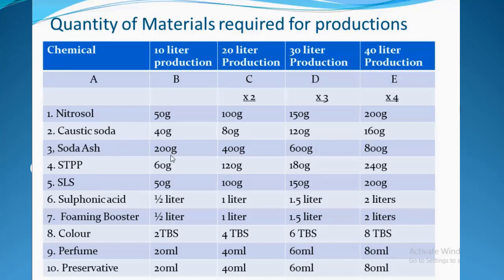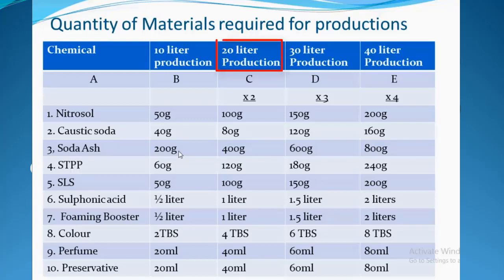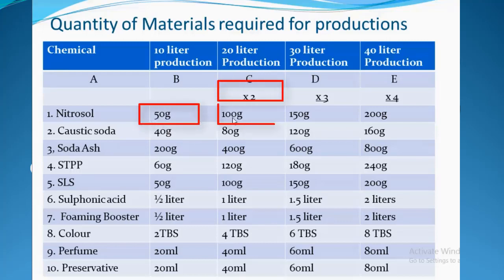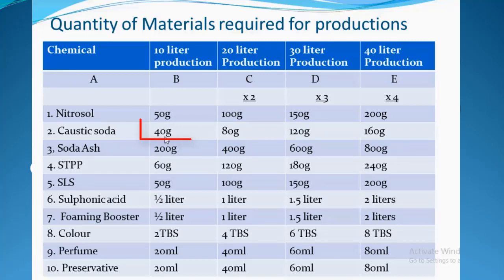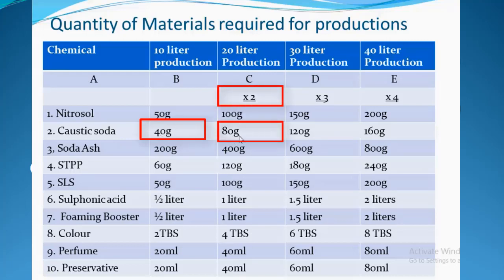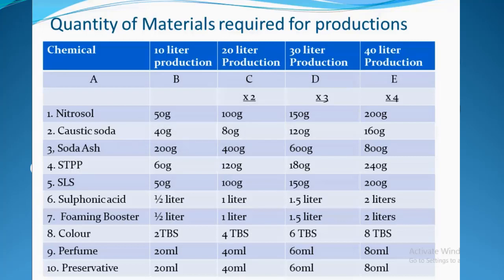If you want to produce 20 liters of liquid soap, all you do is multiply the quantities in column B by 2. For example, nitrosol: 50g × 2 = 100g. Caustic soda: 40g × 2 = 80g. Soda ash: 200g × 2 = 400g.